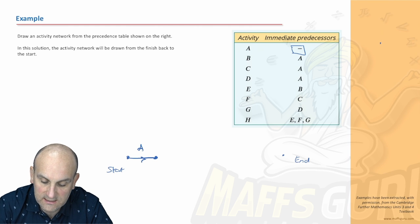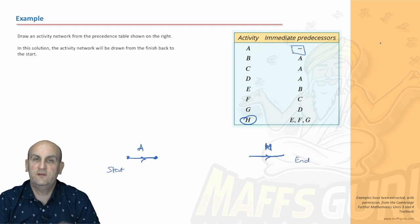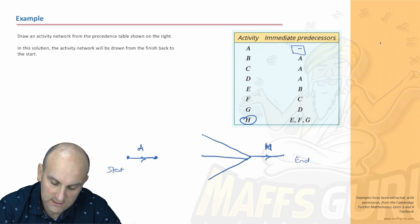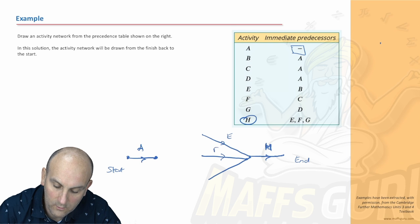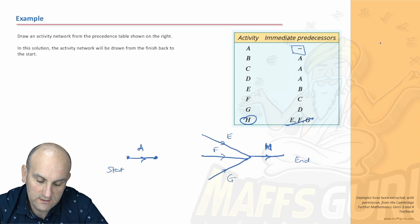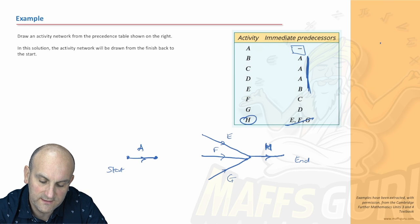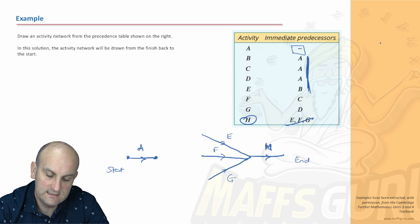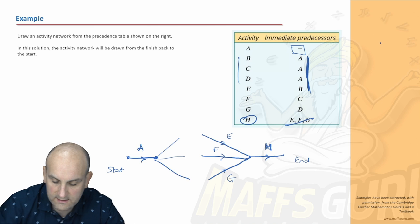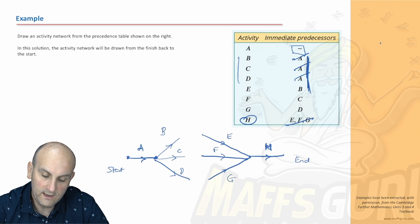H is the only final activity, so there is activity H, with E, F, and G all coming into it. From the start side, B, C, and D all have A as their only predecessor, so three lines come off A — there is B, C, and D. G can only start when D has completed, so I extend that D line and connect G. F can only start when C is finished, so I connect C to F.